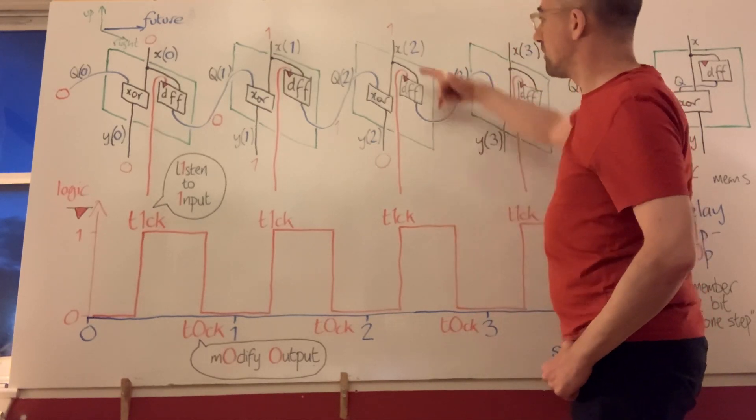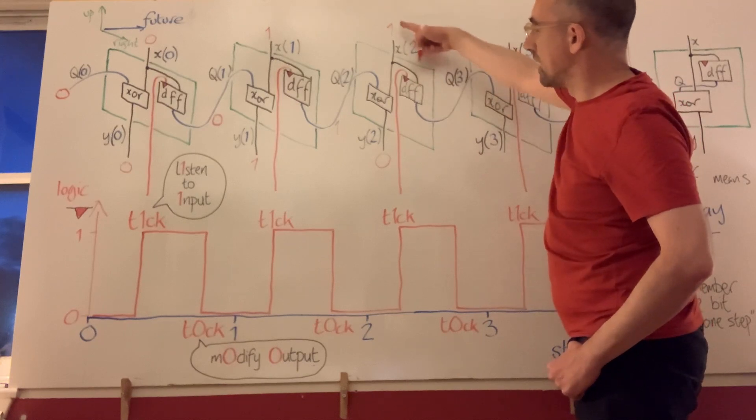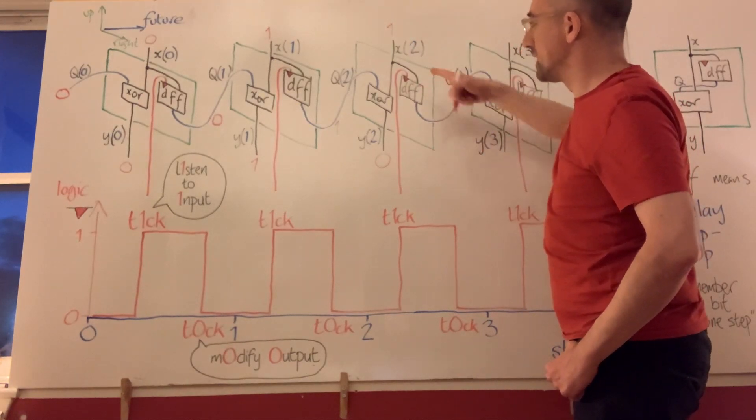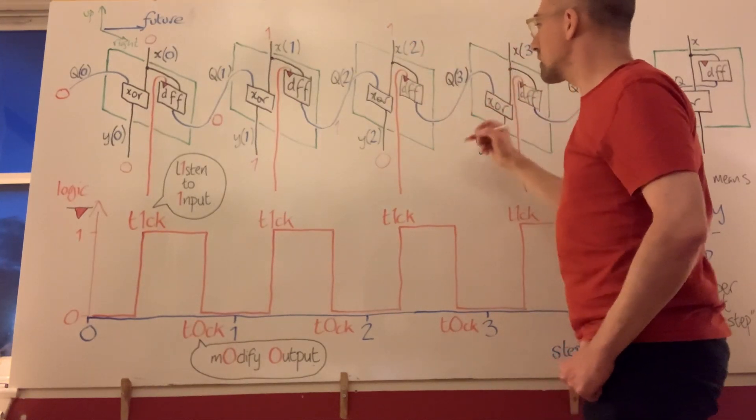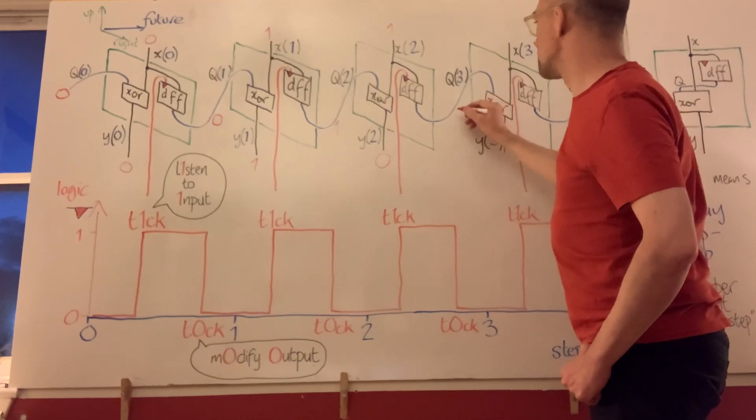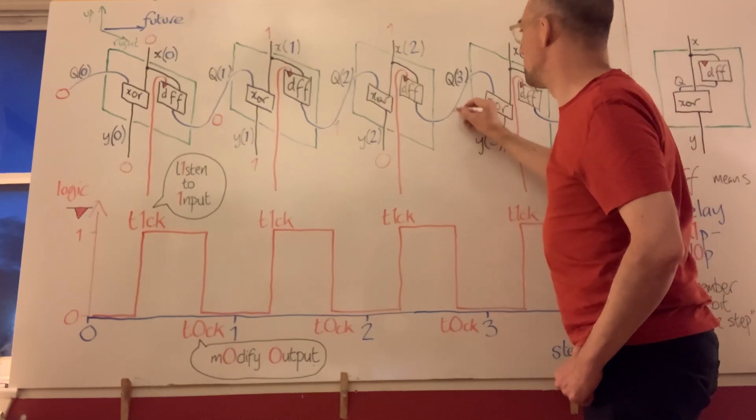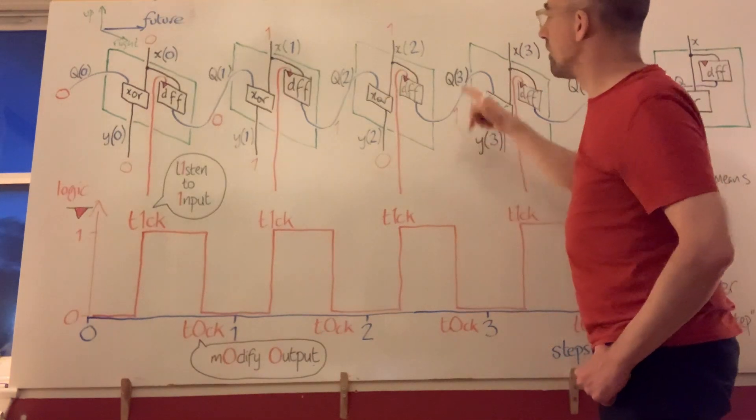But when the tick happens, the flip-flop will recognize that a 1 came in, listening to its input. And when the tock happens, the flip-flop will change its output, or rather retain its same output as last time, being 1.